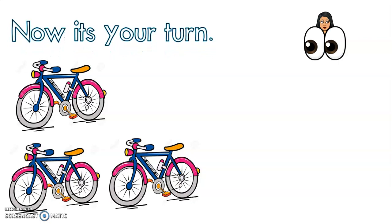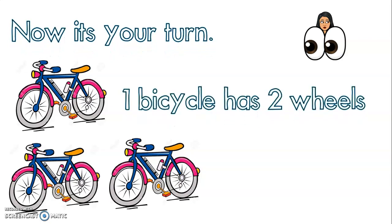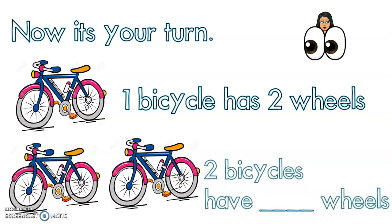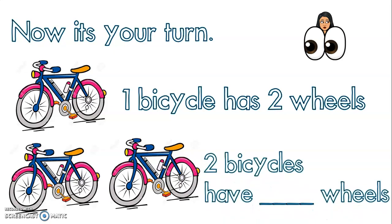Now it's your turn. I see a bicycle. One bicycle has two wheels—that's correct. So at the bottom, two bicycles have how many wheels? Can you count them? One, two, three, four. So two bicycles have four wheels. Well done!